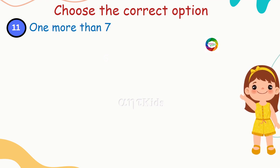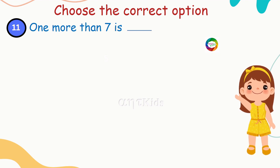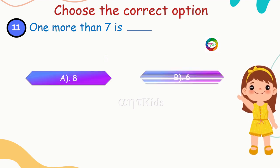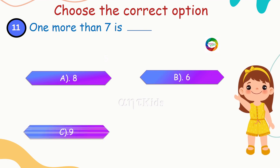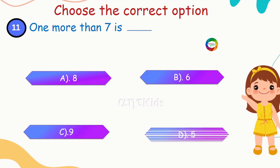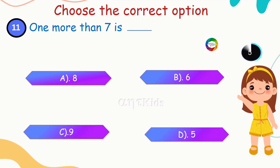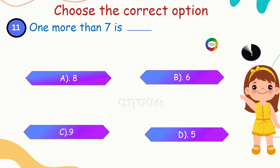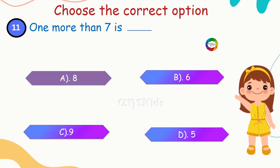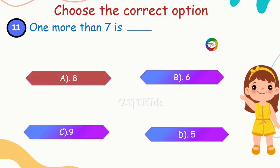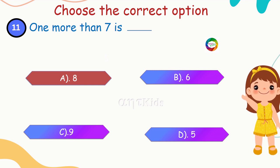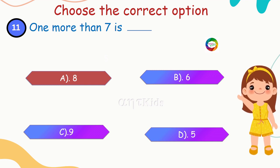Next question: one more than seven is what? What is one more than seven? Options are: 8, 6, 9, 5. Yes, eight is the correct answer — you have to add one and seven. Seven plus one is eight, so one more than seven is eight.